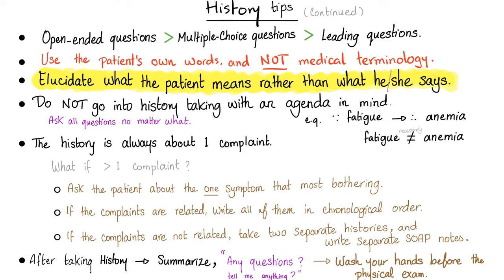If the patient says 'I'm having difficulty breathing,' don't assume it's shortness of breath. Elucidate — ask 'Do you feel short of breath or chest tightness?' If the patient says it feels like an elephant sitting on their chest, that's cardiac chest pain, not a lung problem. Always clarify what the patient means rather than jumping to conclusions.